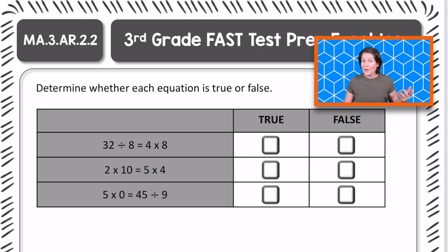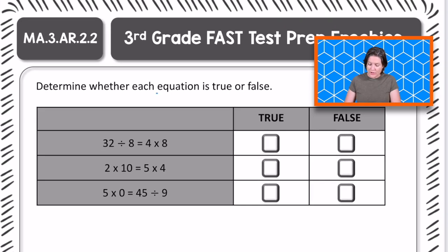All right, 3rd grade, welcome back. Let's go ahead and see how you did. So I see that this problem is a matching item question with true and false. It says determine whether each equation, that means that we have equal signs, which we notice right here, is true or false. False means not true.